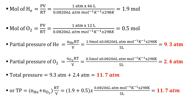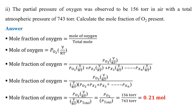Each gas exerts its partial pressure, and the two partial pressures together give the total pressure. Substituting values gives 2.4 atmospheres as the partial pressure of oxygen. The total pressure is the partial pressure of helium plus the partial pressure of oxygen: 9.3 + 2.4 = 11.7 atmospheres. Using the combined formula with total moles also gives the same answer of 11.7 atmospheres.